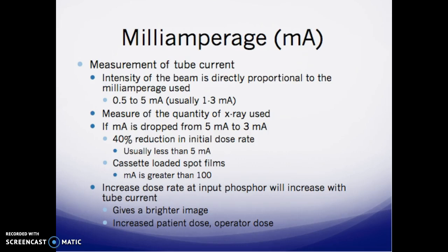First, milliamperage — your MA — is the measurement of your tube current. The intensity of the beam is directly proportional to the milliamperage used. In fluoroscopy we typically use 0.5 to 5 MA. Normal fluoro is 1 to 3 MA, so if the state asks for the MA range for fluoroscopy, it's 0.5 to 5, but we usually operate within 1 to 3 MA. MA is a measure of the quantity of x-rays used.